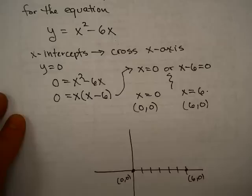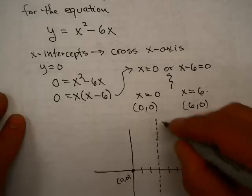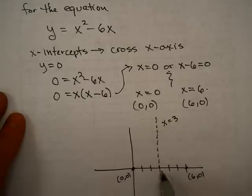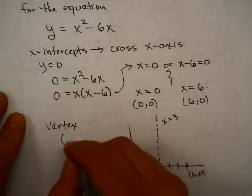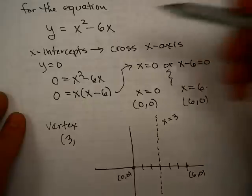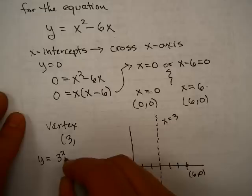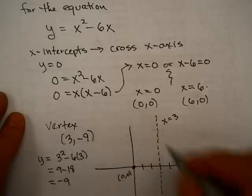What's halfway between (0, 0) and (6, 0)? That would be x = 3. The axis of symmetry has to be x equals 3, because these two points have to be symmetric, and that's exactly halfway in between. That means the vertex has to have an x-coordinate of 3. To find the y-coordinate, I plug in x = 3: y = 3 squared minus 6 times 3, which gives me 9 minus 18, or negative 9. So my vertex is (3, -9).